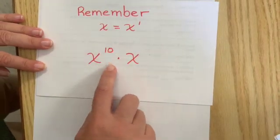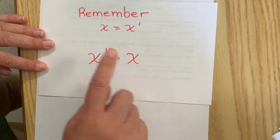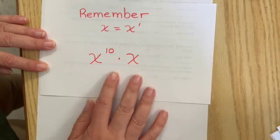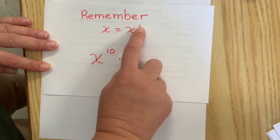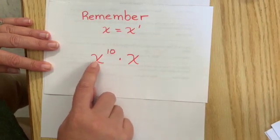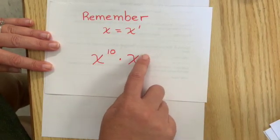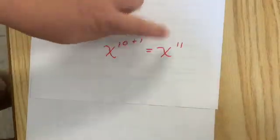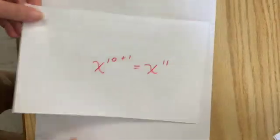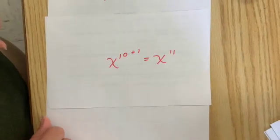Now this one, x to the tenth times x, just a reminder because you'll see this on Khan Academy. Remember that when there is just one x, we write it as x to the one power. So this would be like x to the tenth times x to the one power. Let's add a little one there. What would that be? x to the tenth. So I think you are all ready to go try it out on Khan Academy.